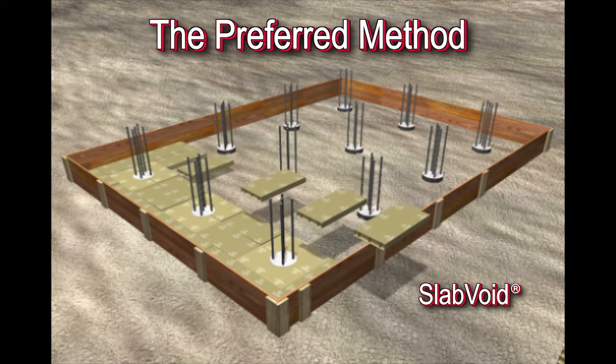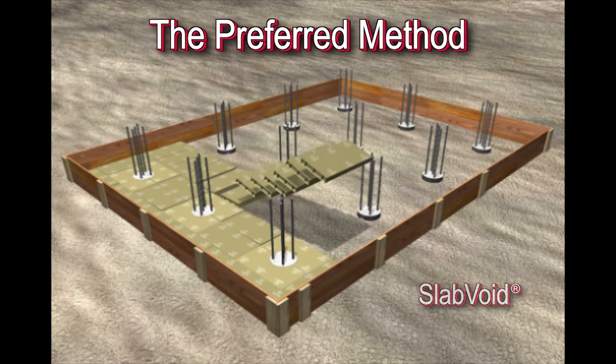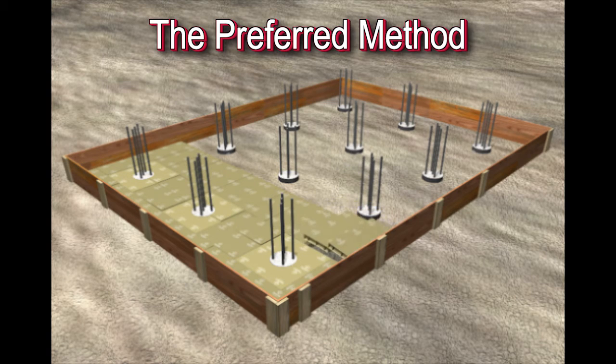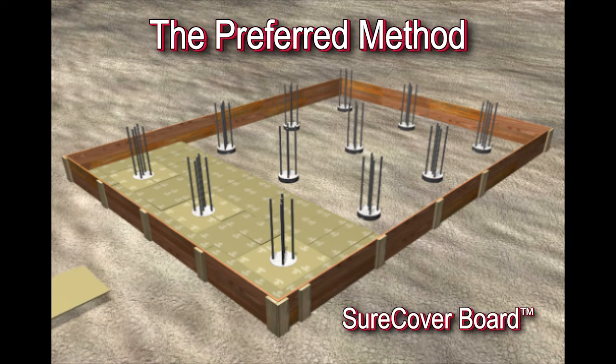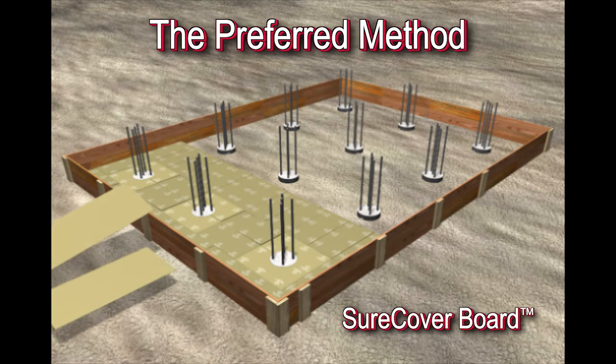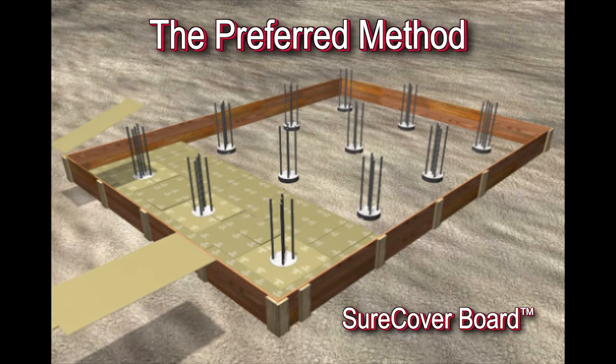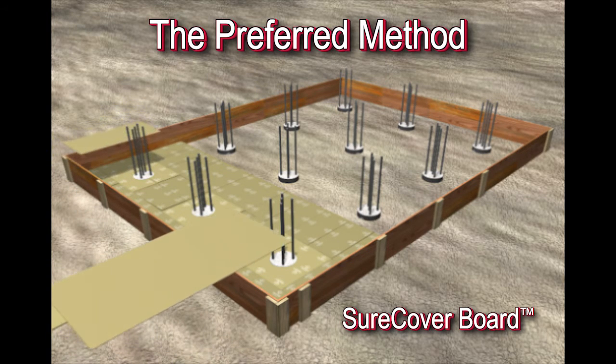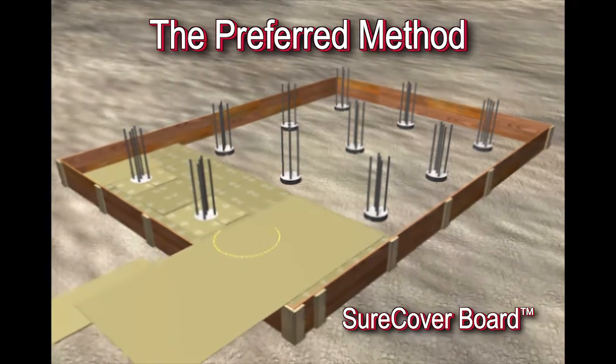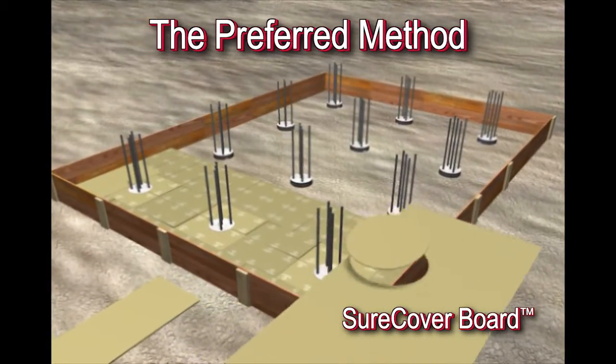The Slabvoid is randomly placed, end-to-end and side-by-side. Sure Cover Board is a very important product to the Slabvoid system. It is available in random sizes and thicknesses. This product is simply placed on the Slabvoid to protect the entire surface from pinpoint loading, and control the damage from foot traffic.